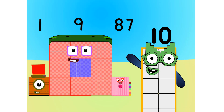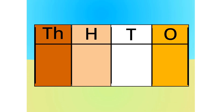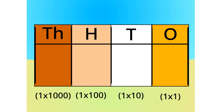Let me carry on with the first method. Do you notice anything with this table? Correct. The number multiplies by 10 each time it goes left one column. Because it multiplies by 10 each time, we call this system base 10.